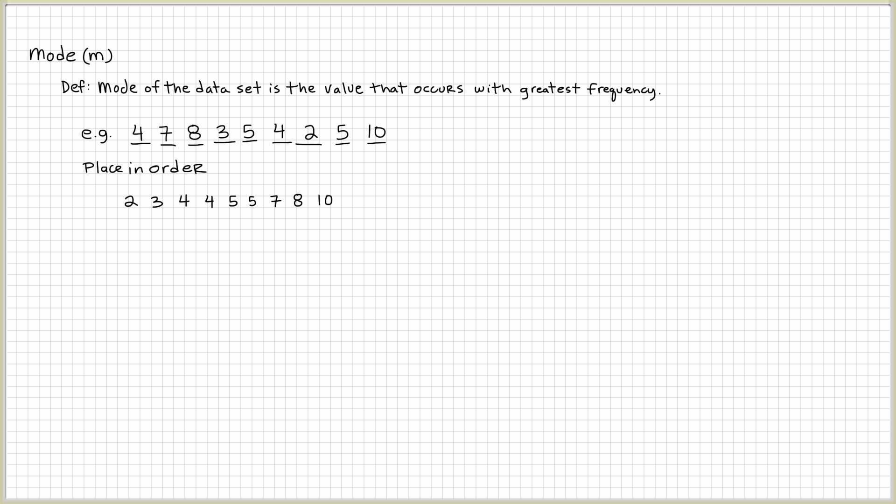Okay, the next thing we want to do is what occurs most frequently? Well, it looks like four occurs most frequently. Anything else? That's right, five. So, we have a mode of four comma five.